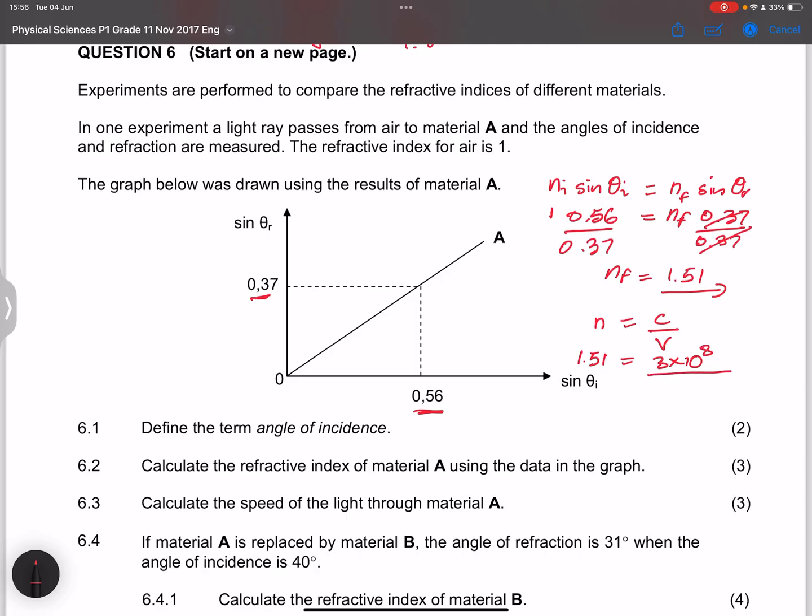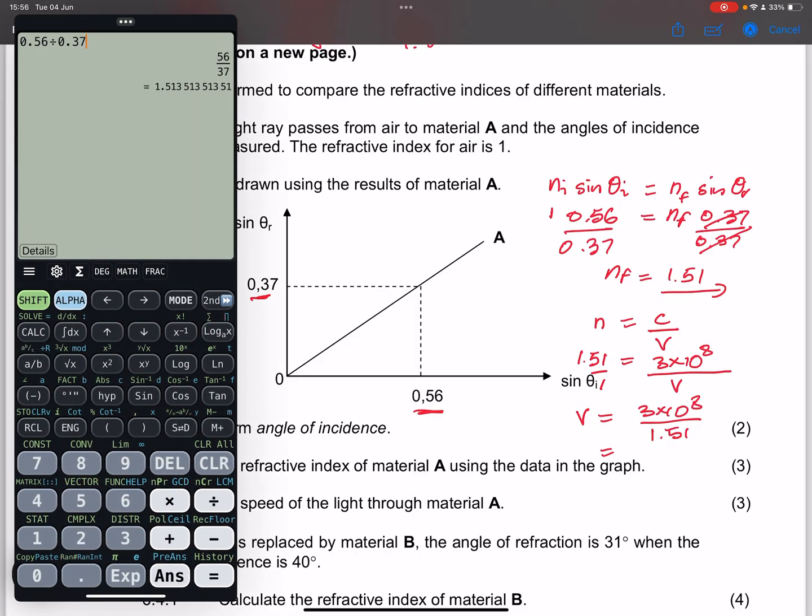And our V value, this is what we are looking for. And all we simply are going to do is just cross multiply. So V would be 3 times 10 to the power 8, divided by 1.51.